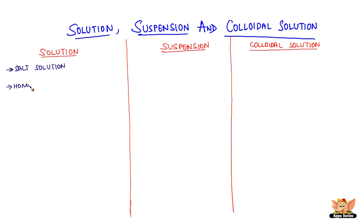A solution is a homogeneous mixture of two or more substances. It has a solute and solvent as its components. The major component of the solution that dissolves the other component in it is called the solvent. The minor component of the solution that is dissolved in the solvent is called the solute. In our example, water is the solvent and salt is the solute.